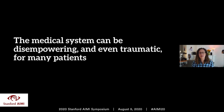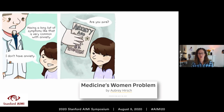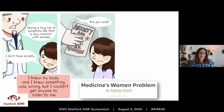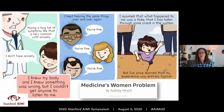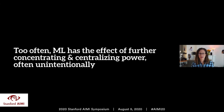The medical system as a whole can be disempowering and even traumatic for many patients. Aubrey Hirsch wrote a powerful comic about her experience with Graves disease — it took her six years to get a diagnosis, during which she suffered permanent damage to her eyes, bones, and heart. Doctors dismissed her, saying her list of symptoms must just be due to anxiety. She writes: 'I knew my body and I knew something was wrong, but I couldn't get anyone to listen to me.' So many doctors told her she was fine that she began to internalize it and doubt herself, even as she was suffering severe symptoms. She writes: 'I assumed that what happened to me was a fluke, but I've since learned that my experience was entirely typical.'